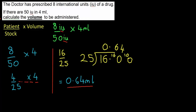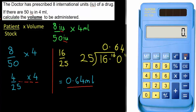Checking with the calculator — the units were the same, so: 8 divided by 50, times 4, equals 0.64, as expected.